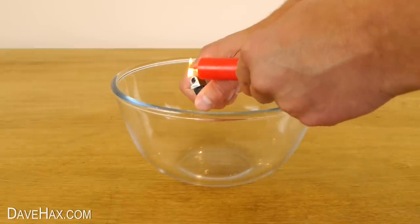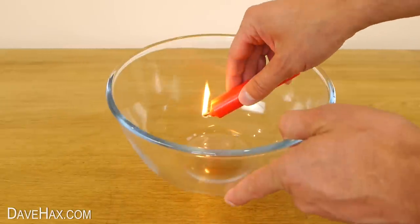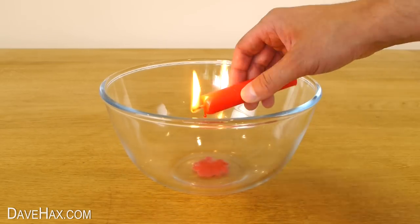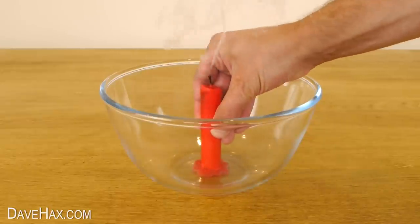Start by lighting the candle and carefully drip a puddle of wax into the bottom of the bowl like this. When there's a good covering, blow out the candle and stick it into the melted wax.